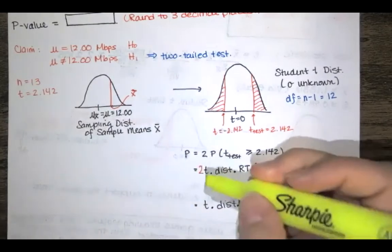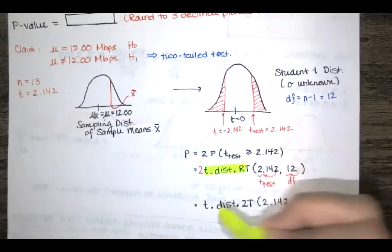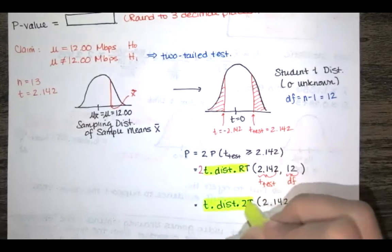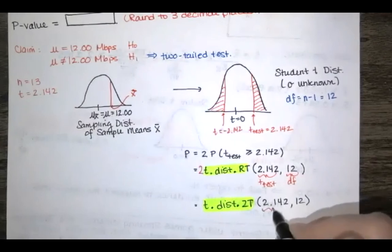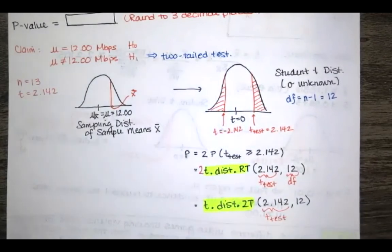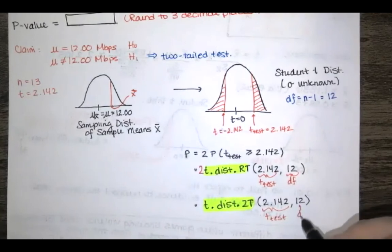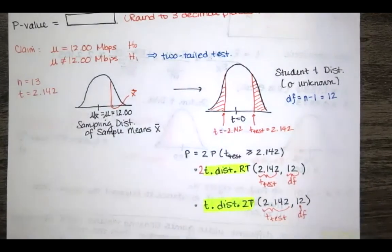So I'm going to highlight those. These are the functions in Excel and Excel tells you that this is where you enter the value of t and that this is your degrees of freedom. So I'll do this in Excel now.